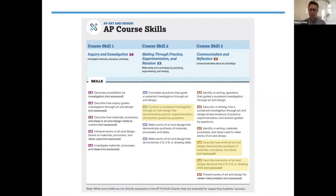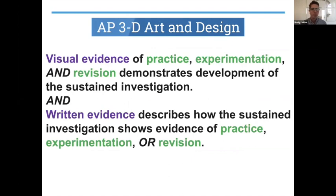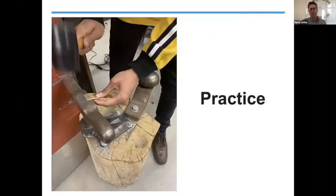Today we've talked a lot about core skills. Through practice, experimentation, and revision — and then communication and reflection — we're really talking about how you're going to be writing about all these visual interpretations of that experimentation, revision, and practice. Looking at the scoring rubric, it's a three-point rubric and we really want to focus on that three. We're looking at visual evidence of practice, experimentation, and revision that demonstrates development of the sustained investigation, as well as written evidence to describe that evidence.